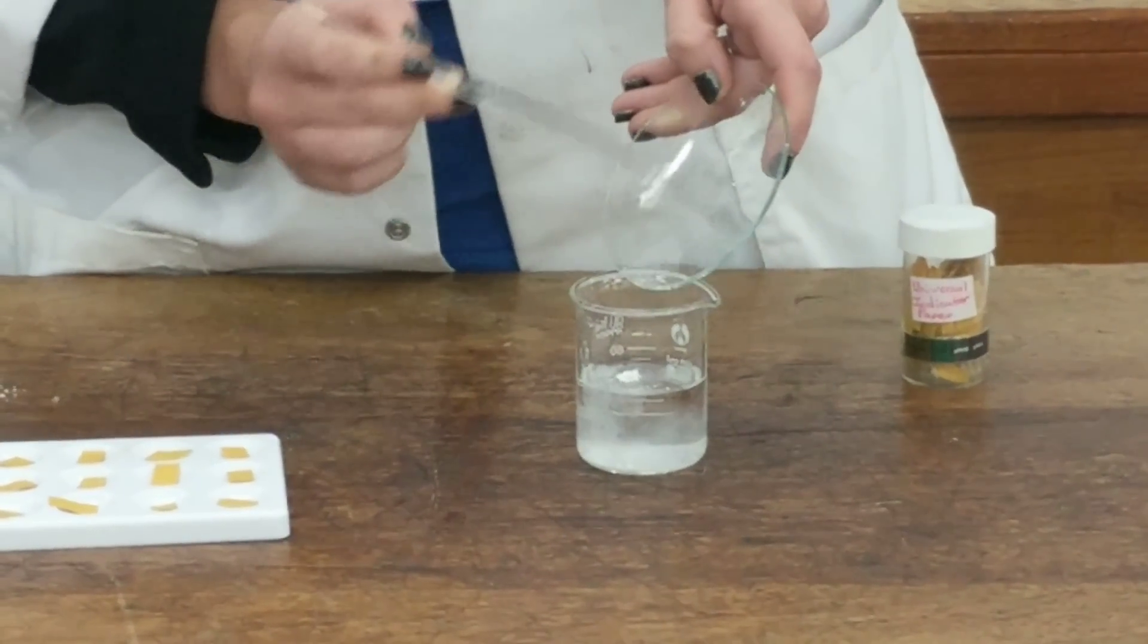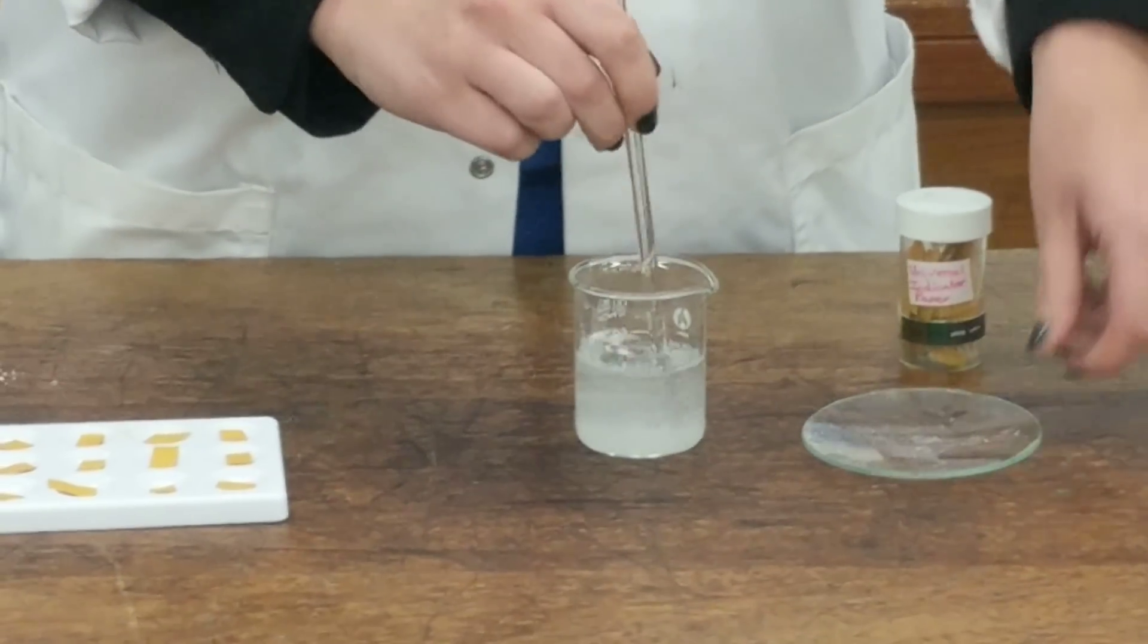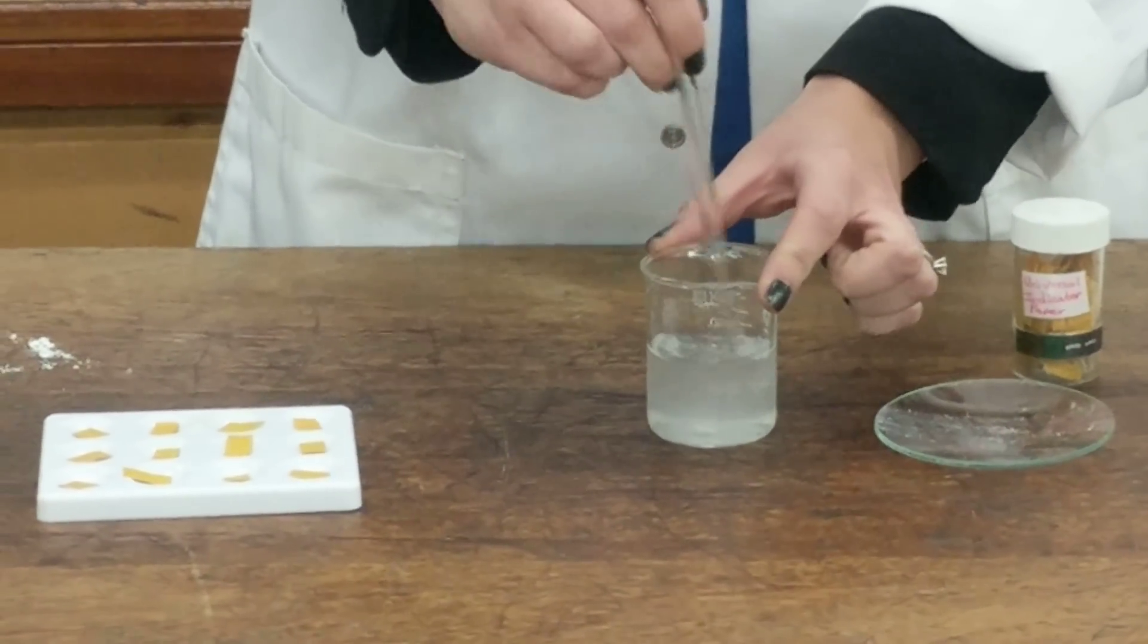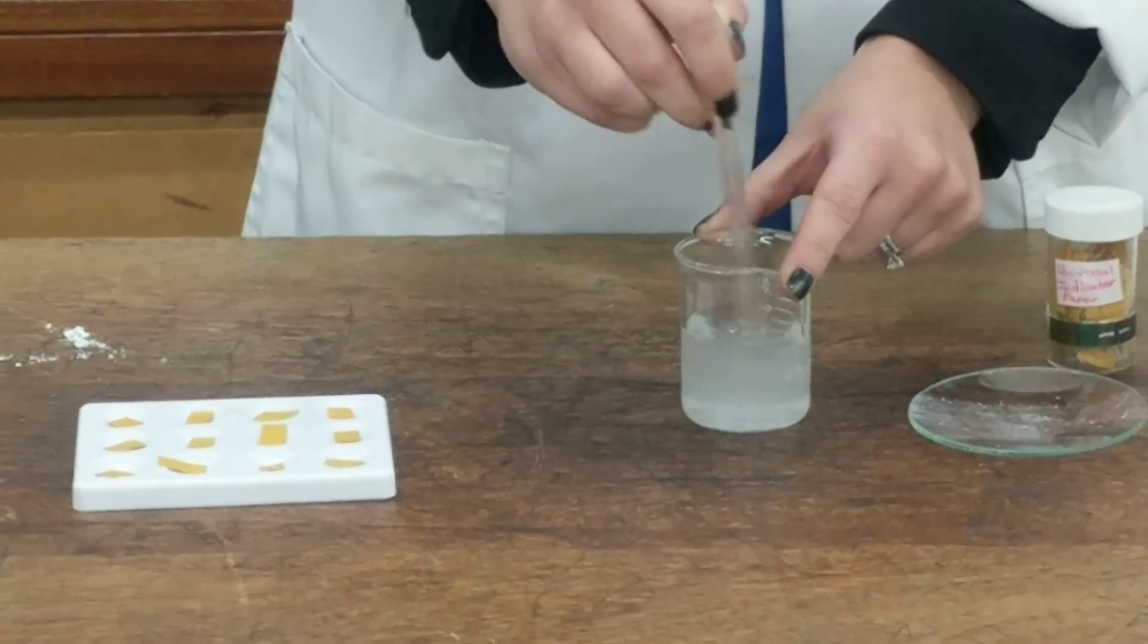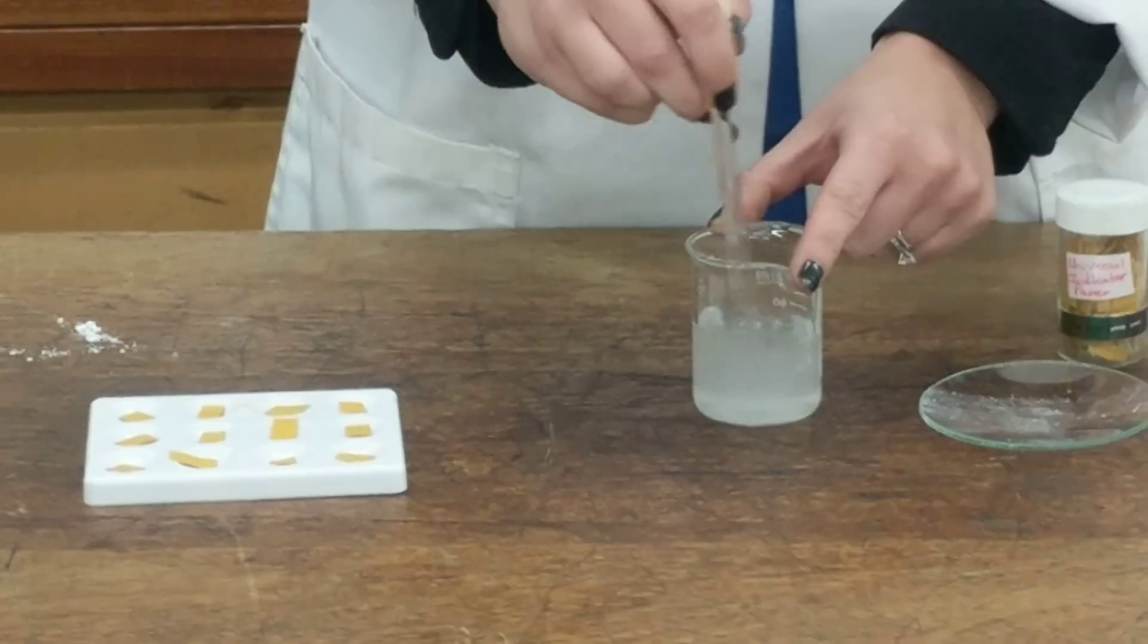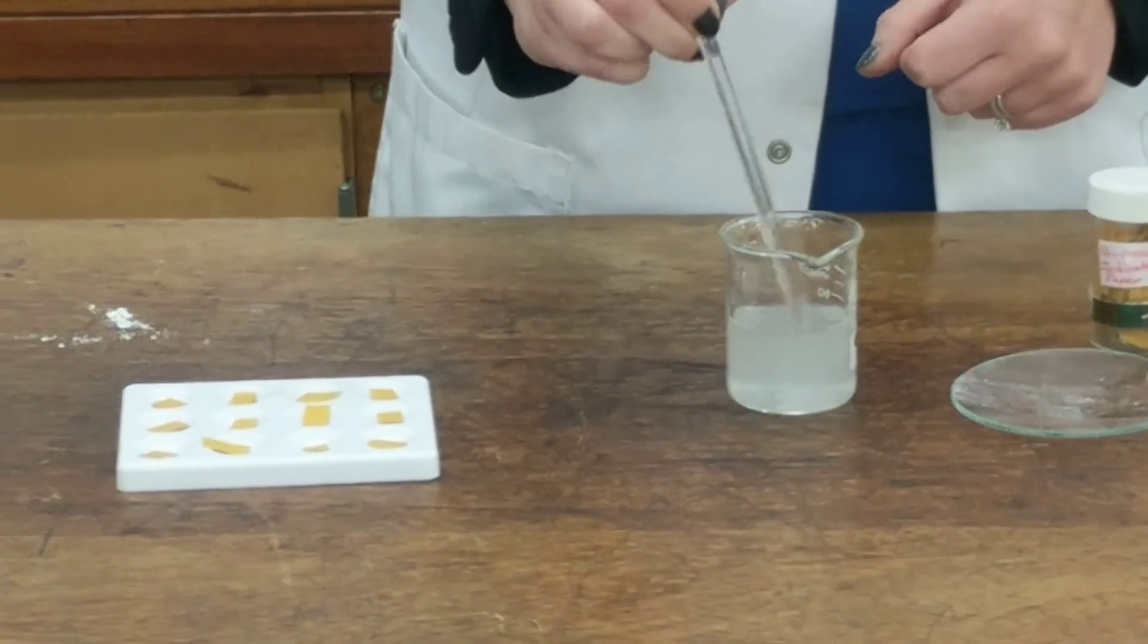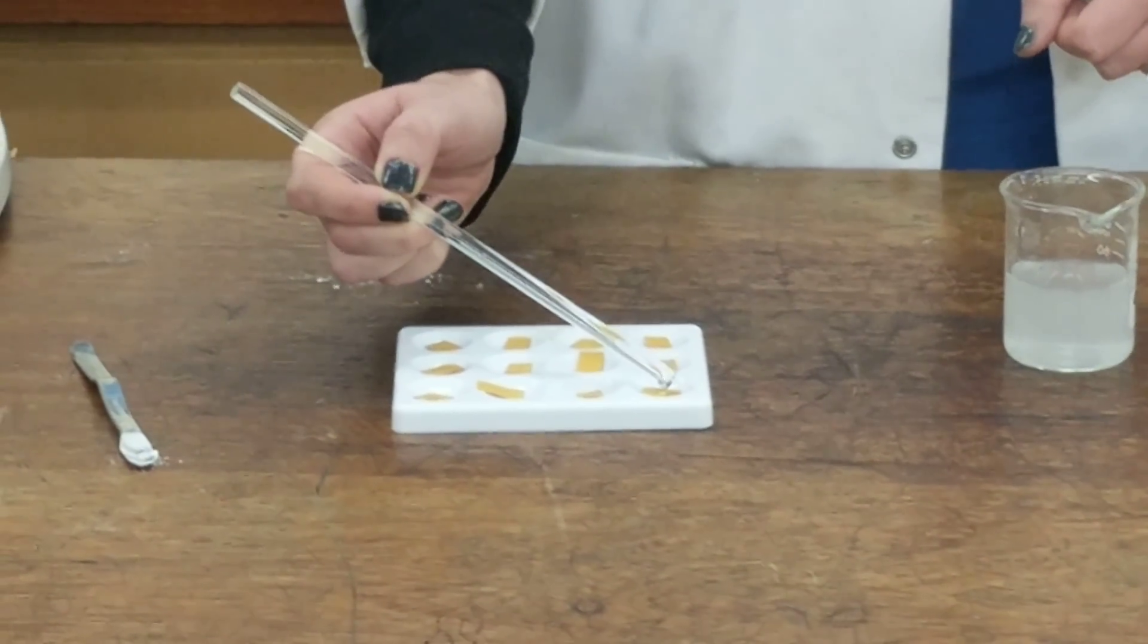Making sure it's all gone in so that the reading is accurate. Put a good stir to ensure it's all reacted. And then you'll take one drop of that onto the first piece of universal indicator paper.